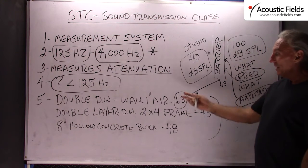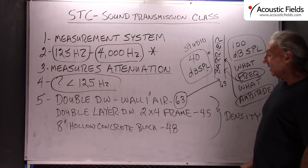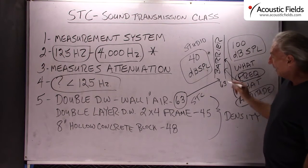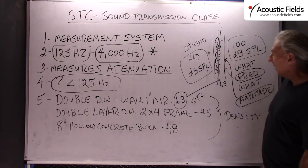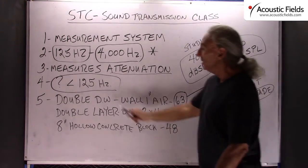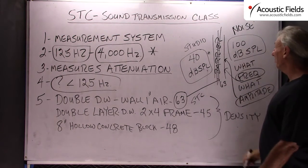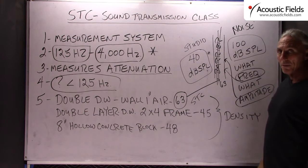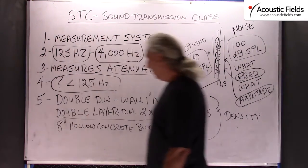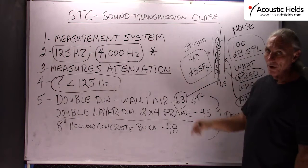Let's look at some examples. The standard 2x4 double wall approach that we see a lot of in the literature, with drywall on both sides, has a measured STC of 63. So if we have 100 on the outside, we build our double wall with a 1-inch air space, then we can anticipate 40 to 45 on the inside — if our frequencies of concern are from 125 to 4000. Well, most of the time they're even lower than 125, so our barrier won't be helpful on those frequencies. If you put two layers of drywall on both sides of a 2x4 frame, you get a 45 STC rating, which is 125 to 4000.